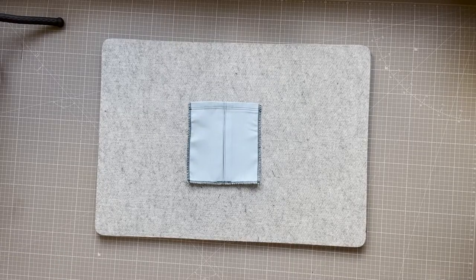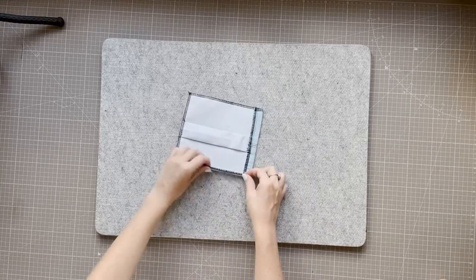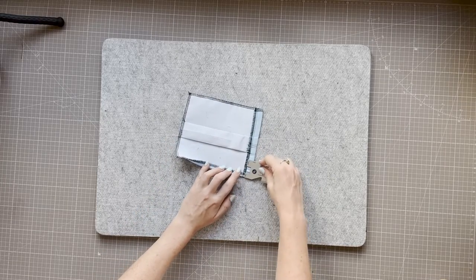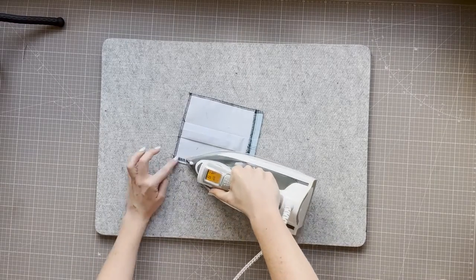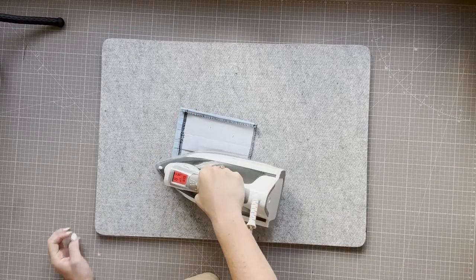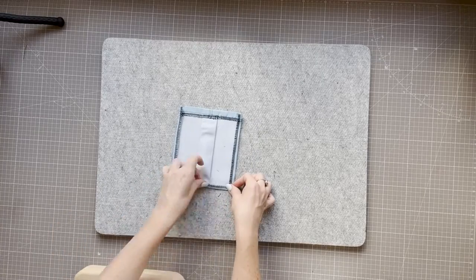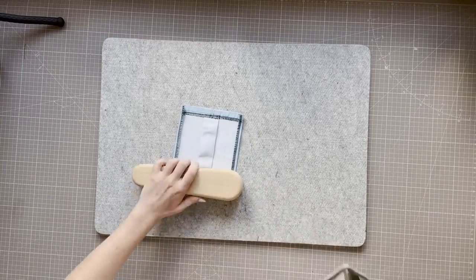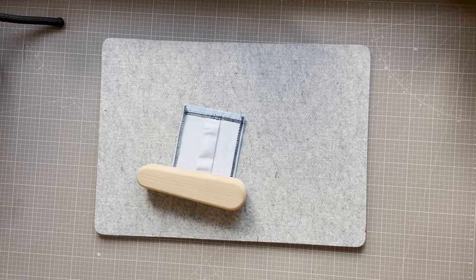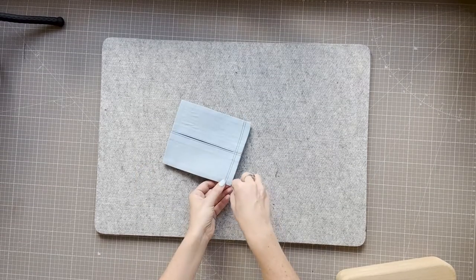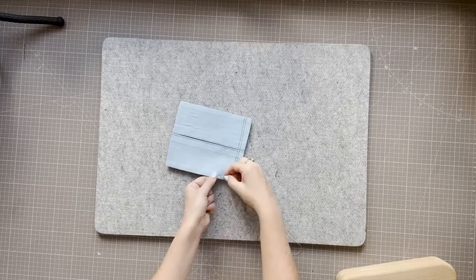The final three sides have a one centimetre hem. Measure and press each in turn. Base stitch this in place to make the next steps easier to work with.